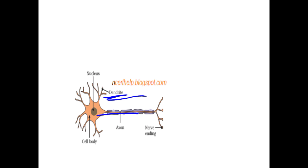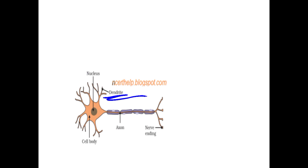Then you can see a long fiber that is known as the axon. The axon gives information from one nerve cell to the next one through the nerve endings. So the dendrites collect information and give it to the cell body, and from the cell body, through the axon, the information is passed to the next cell. The axon is covered by a sheath known as the myelin sheath. The myelin sheath is made up of small units known as Schwann cells.